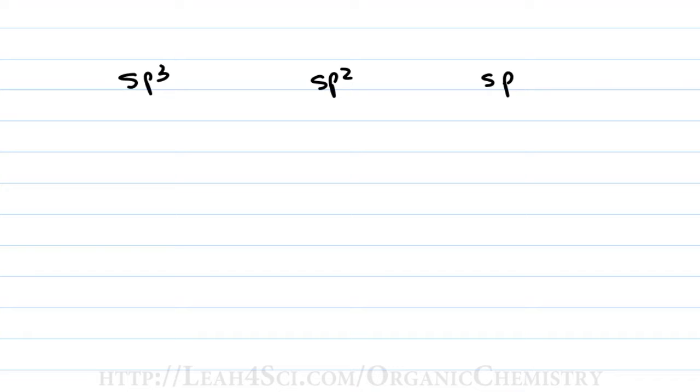So the more s character we have in that hybridization, the more acidic the molecule is going to be. S character is simply percent s out of the total number of orbitals. So here's how we calculate it.